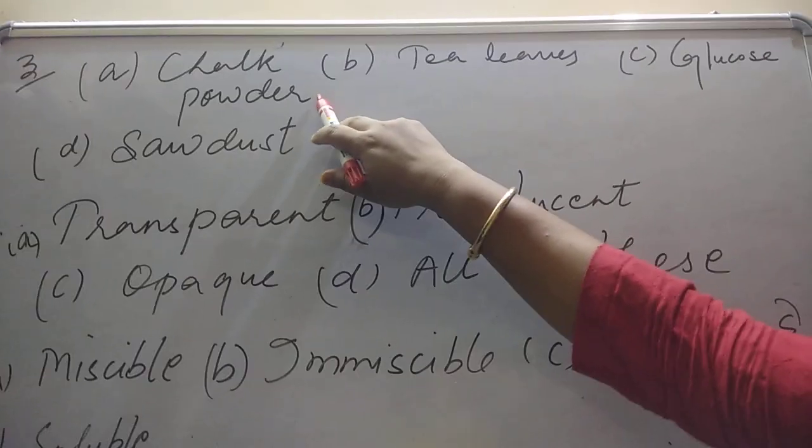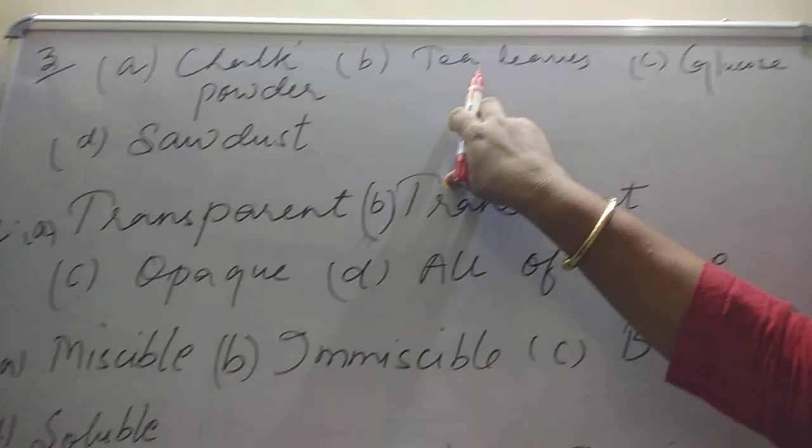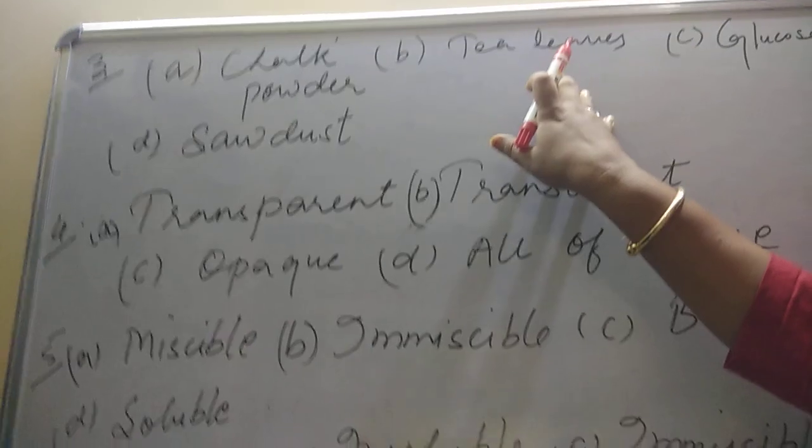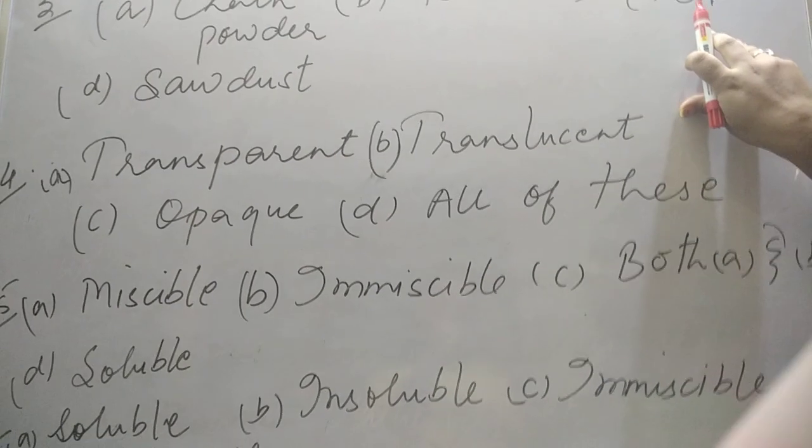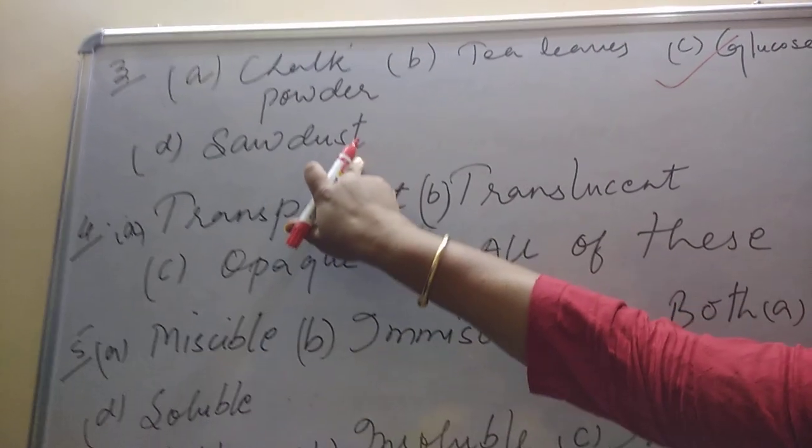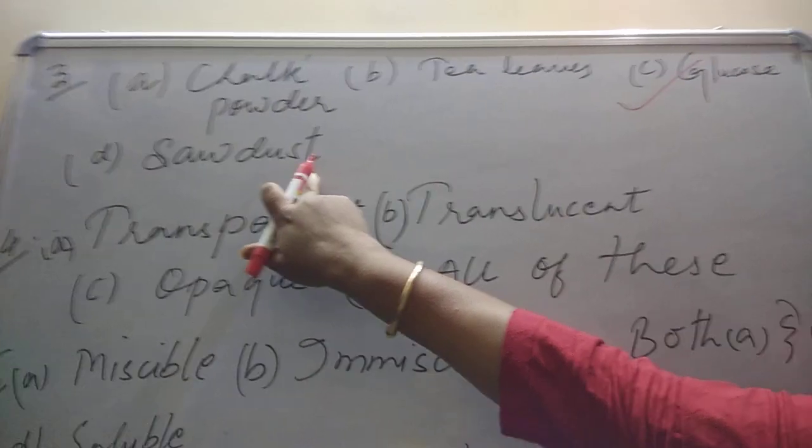Completely soluble, definitely it cannot be chalk powder. It cannot be tea leaves. They are not soluble. Completely soluble, you will not find these two. You will find glucose which is completely soluble. And the answer will be glucose.